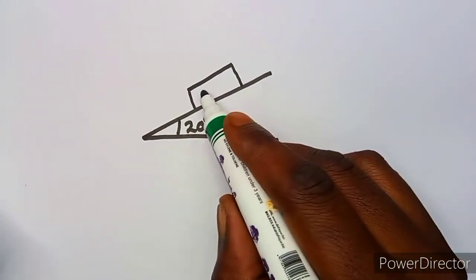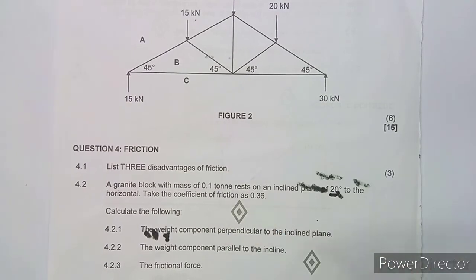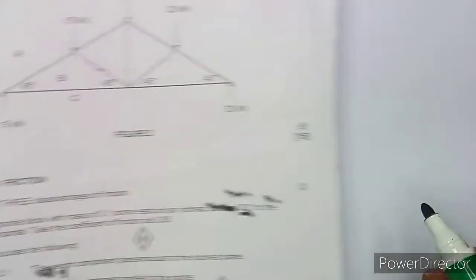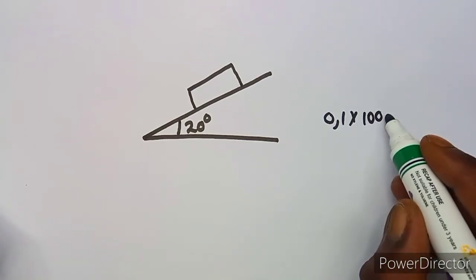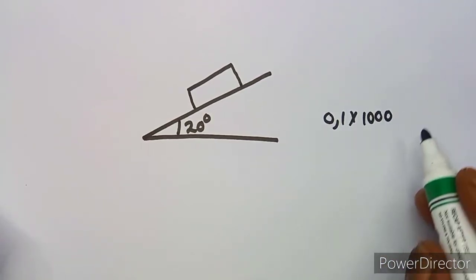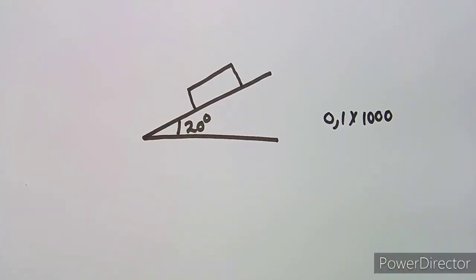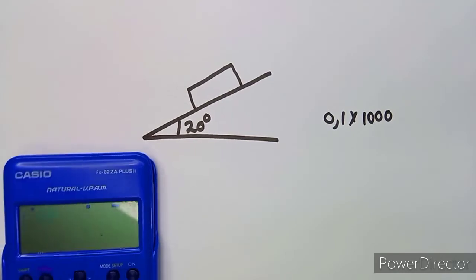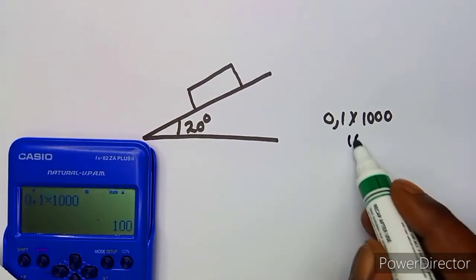When working with mass, make sure you work in kilograms. Convert 0.1 ton to kg: one ton equals 1000 kg, so multiplying 0.1 by 1000 gives us 100 kg.